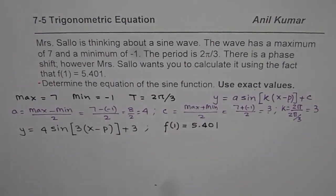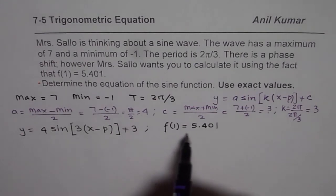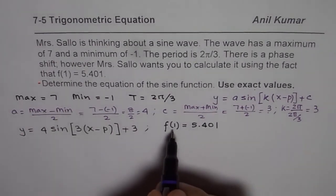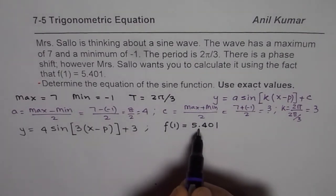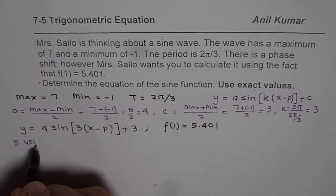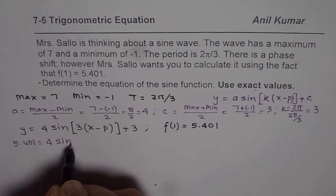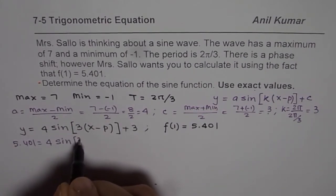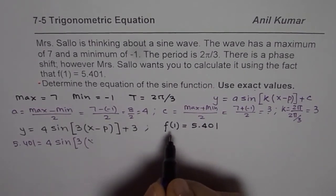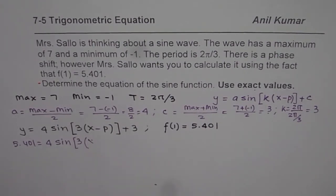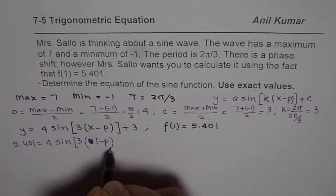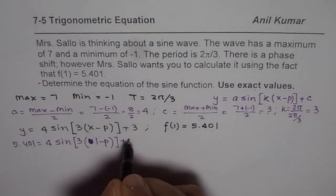This is also a very interesting part and sometimes students get lost because of this, so I have taken it up very separately and clearly. That really means that x is 1 and the y value is 5.401. So let me write here 5.401 = 4 sin(3(1 - p)) + 3.